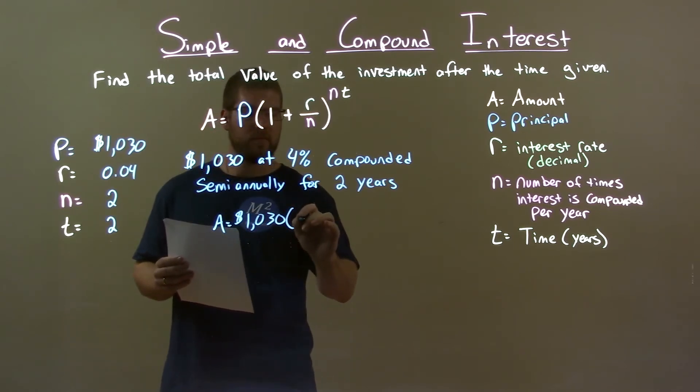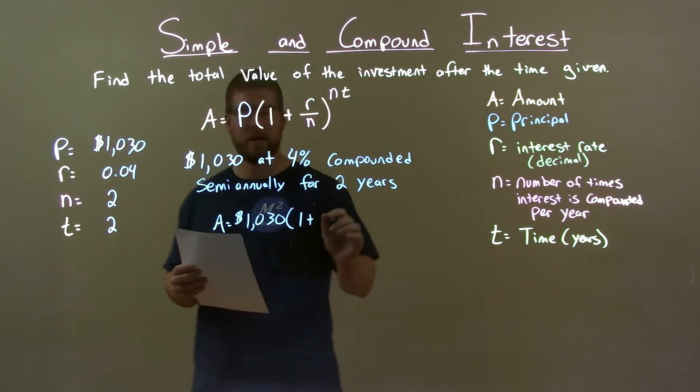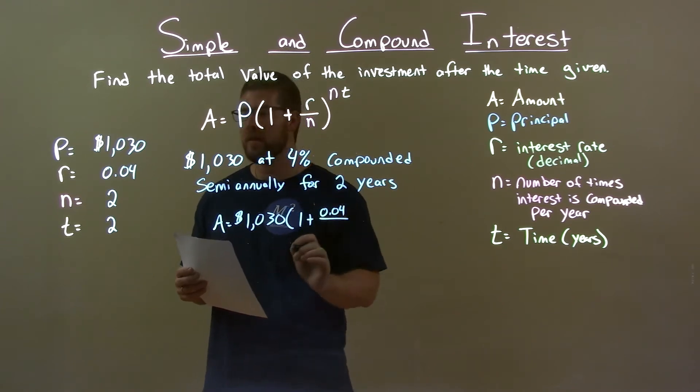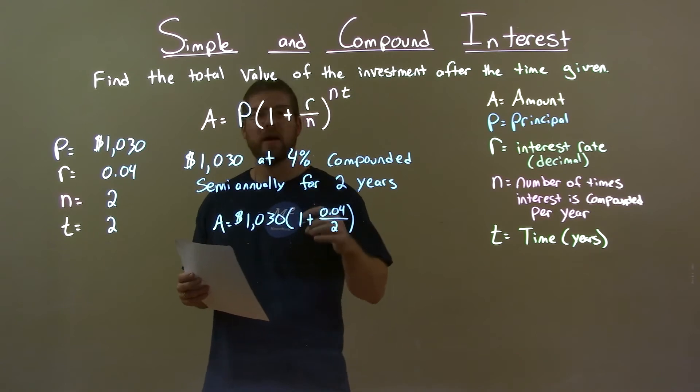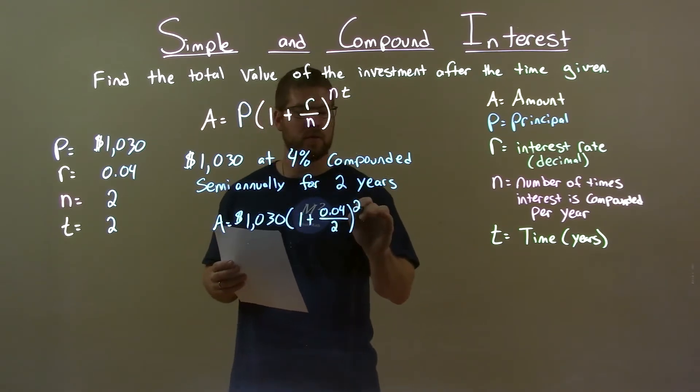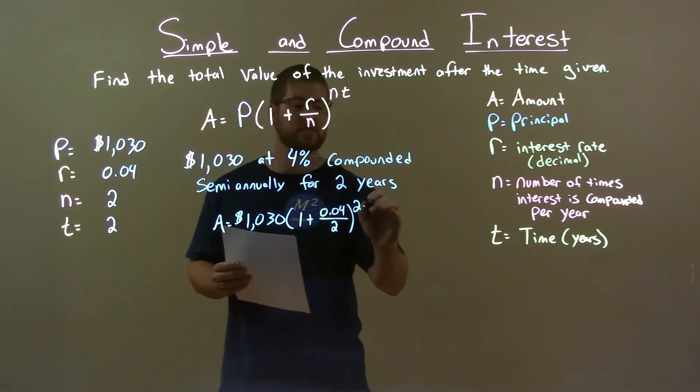times 1 plus my interest rate as a decimal, 0.04, over the number of times we're compounding in a year, which is 2, raised to the power of that number 2 times the number of years, which is also 2.